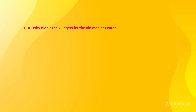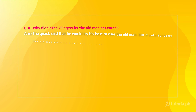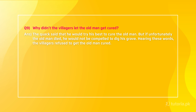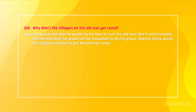Question number nine is: Why did the villagers not let the old man get cured? The quack said that he would try his best to cure the old man, but if unfortunately the old man died, he would not be compelled to dig his grave. Hearing these words, the villagers refused to get the old man cured.